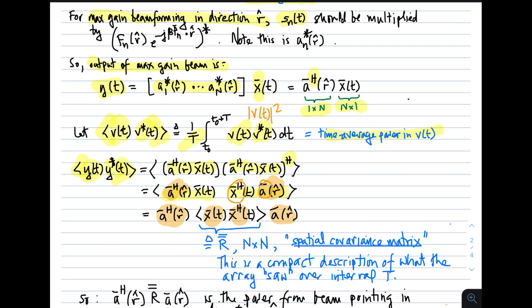We observe that the steering vector doesn't vary with time in this operation, only the snapshot varies with time. We can factor out the steering vector on the left and right, leaving only the snapshot times snapshot Hermitian. That's an n by 1 times 1 by n multiplication which gives you n by n, a matrix. We call that the spatial covariance matrix, R. When we multiply the snapshots together to get this matrix and integrate over some period T, R is a compact description of what the array saw over that interval.